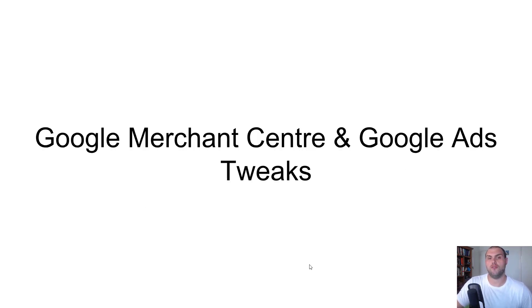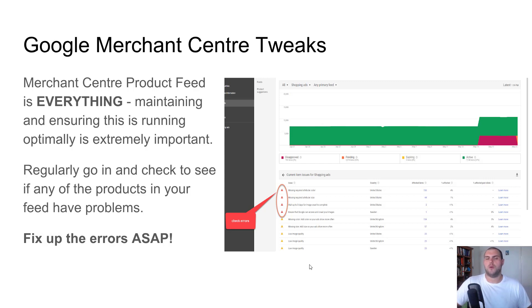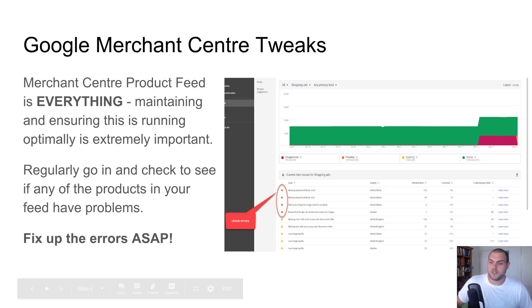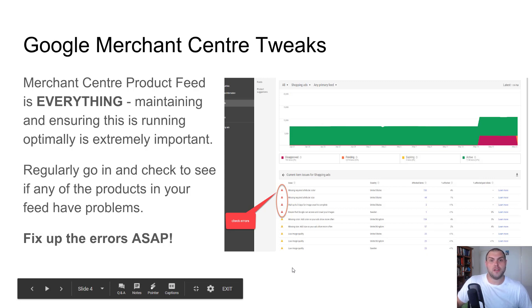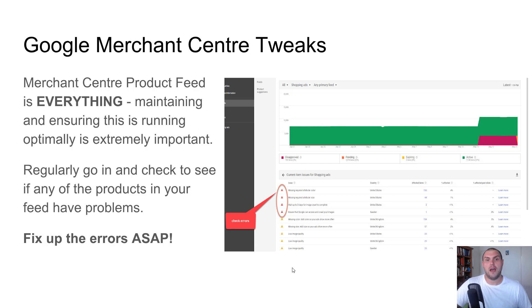Google Merchant Center and Google Ad tweaks. So firstly, the Google Merchant Center tweaks. Your Merchant Center feed is absolutely everything. You need to make sure you're always maintaining and ensuring this is running at its most optimal level. Any of those red or orange error messages that you're seeing within your feed — especially the red, but also the orange — fix those up. If you don't know how to fix them up, Google it. It'll come up within Google's forums, or search YouTube, or contact the Symprocess app developers — they're fantastic and get back to you super quickly.